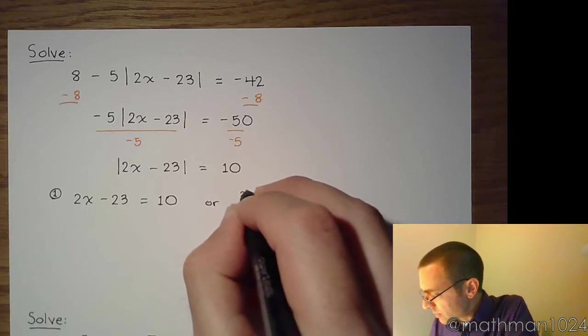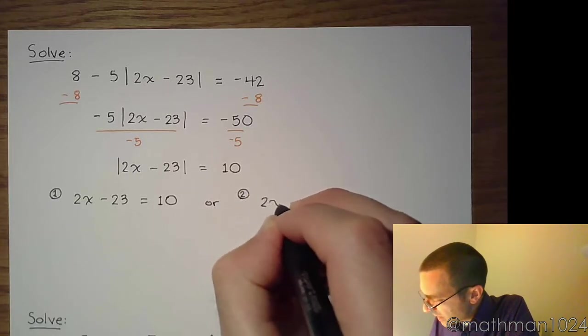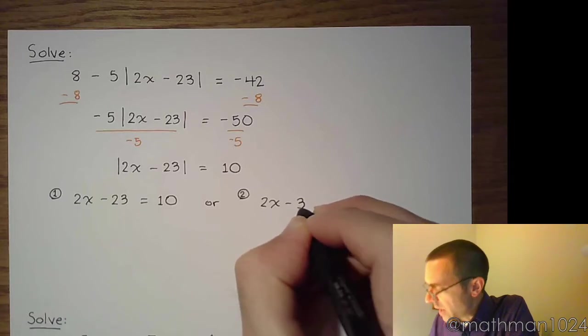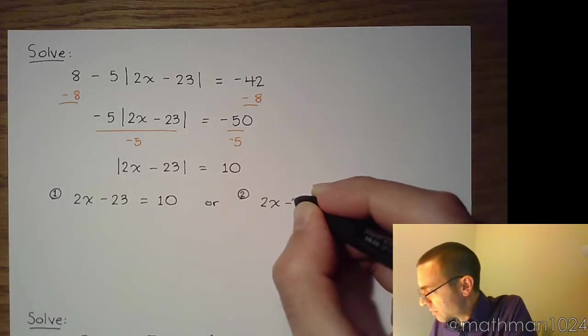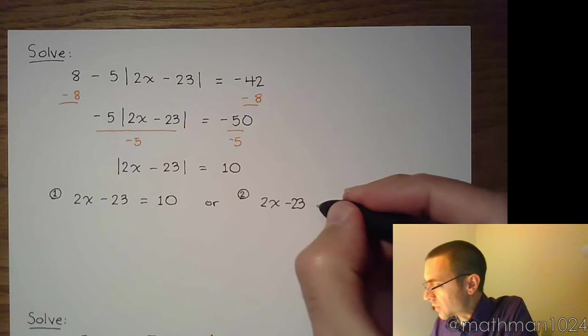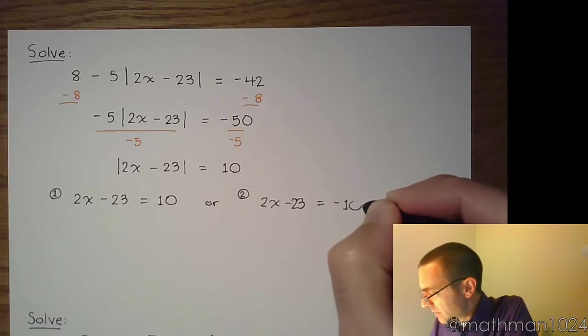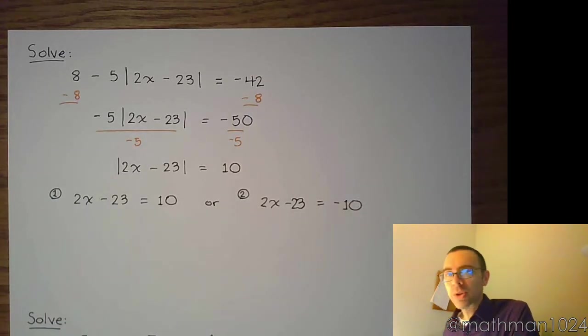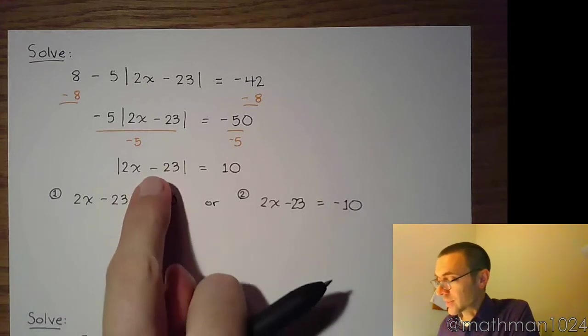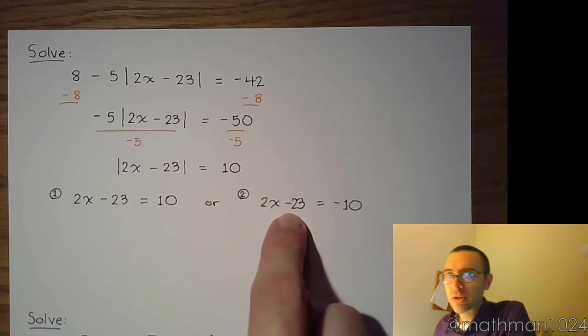Or your other equation is taking the stuff that's inside the absolute value, 2x minus 23, equals negative 10. So make sure that whenever you're copying from one step to the next, make sure you copy correctly. One small mistake like that can ruin the whole problem.